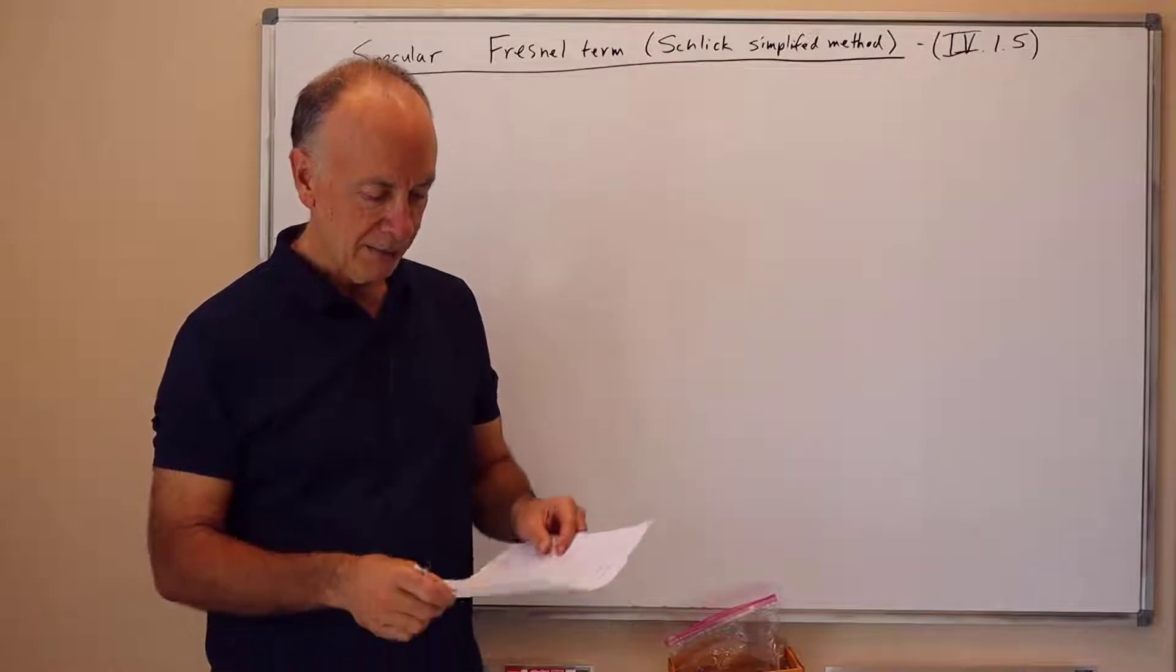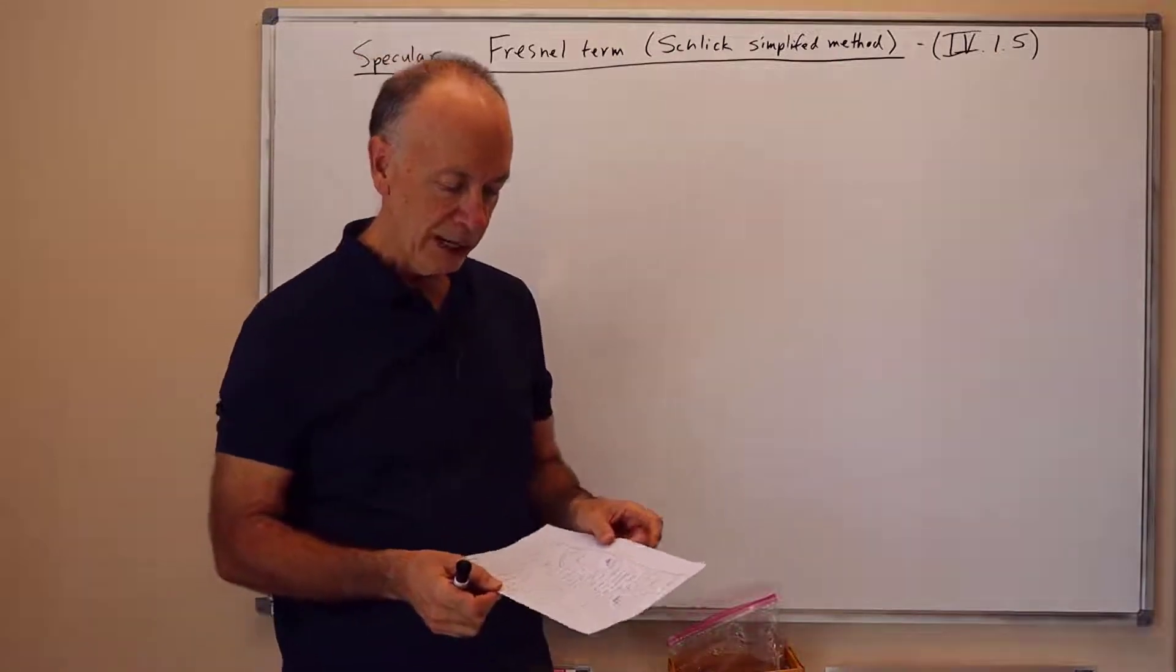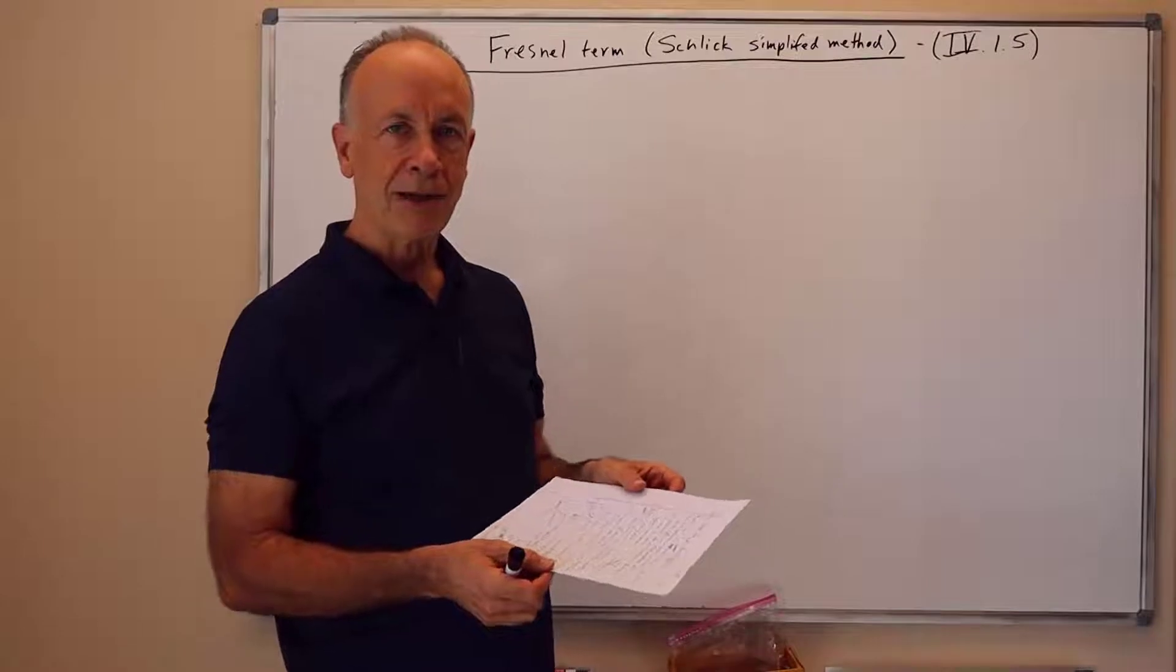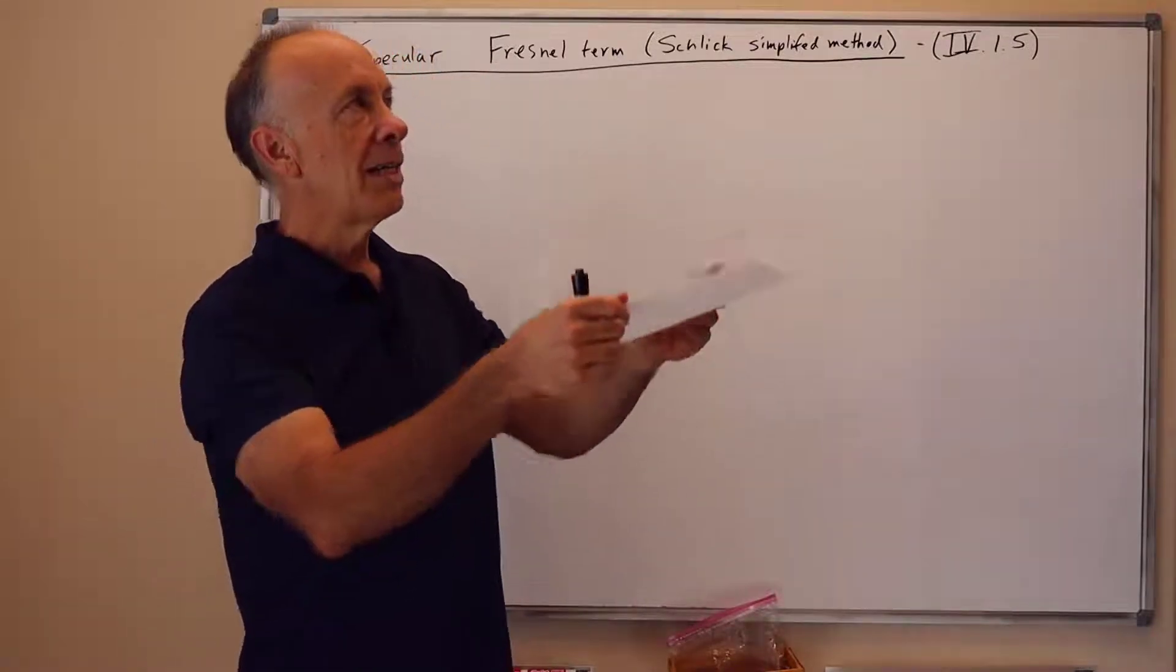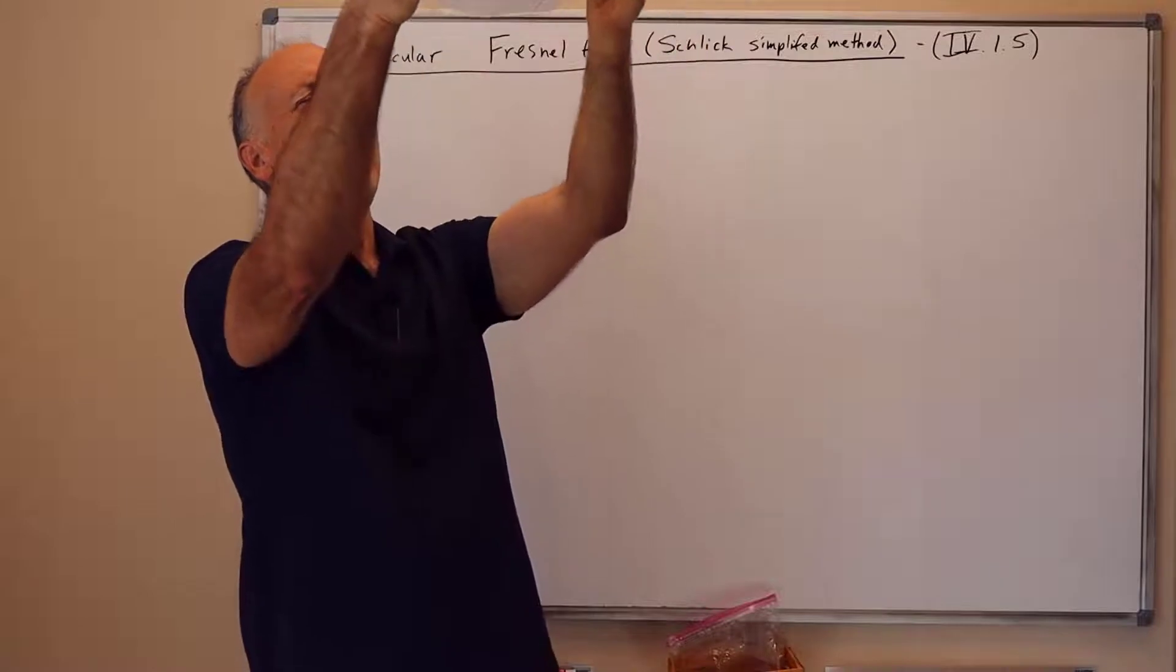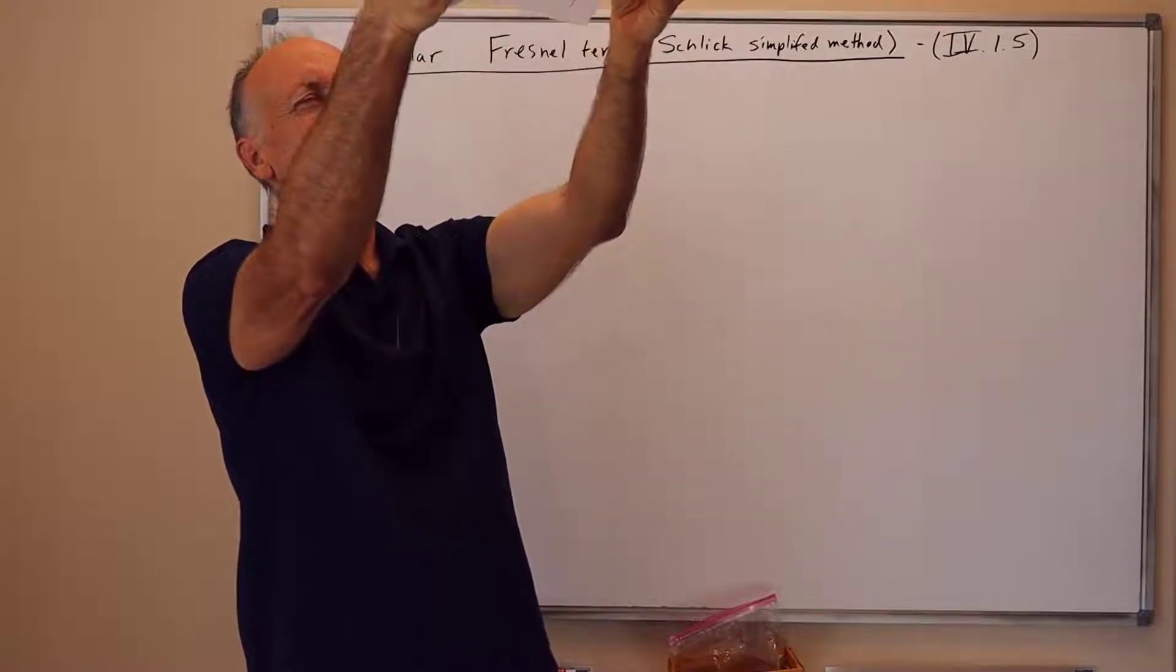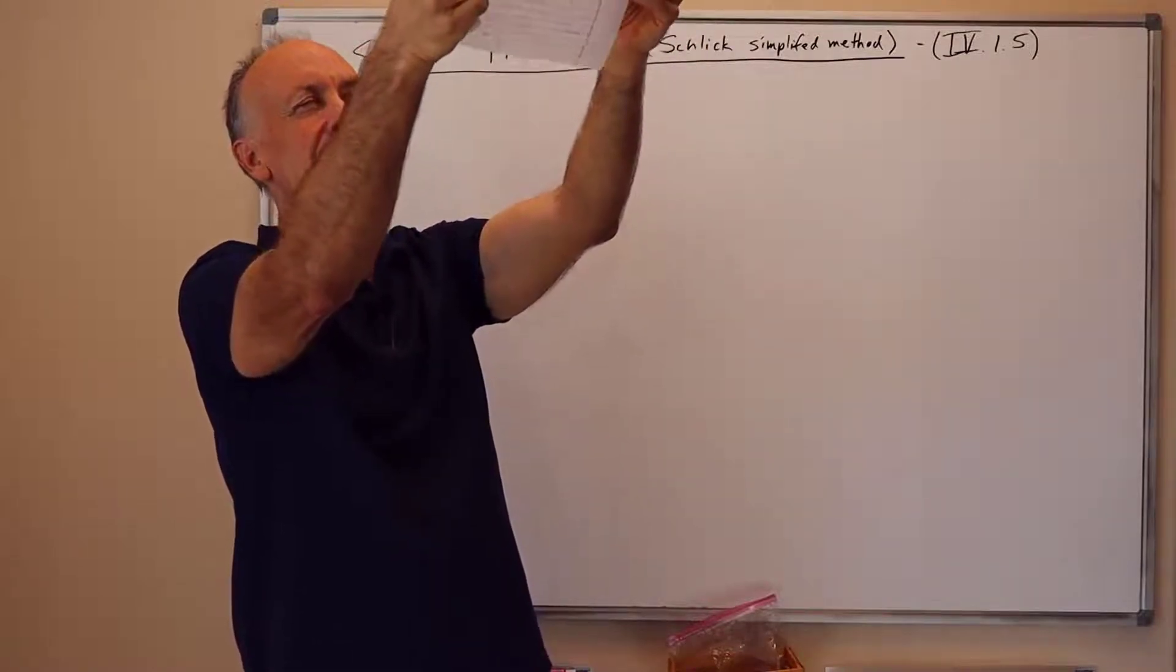So, for instance, take a piece of paper here, a white piece of paper. If you look straight at it, it doesn't look very specular. I don't see any reflection of the lights on the ceiling on the paper. But if I take the paper and put it up at an angle and look towards the light with a grazing angle,